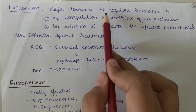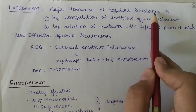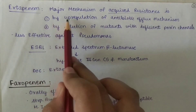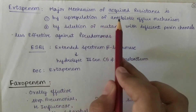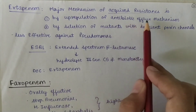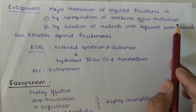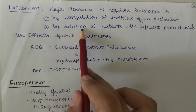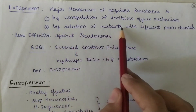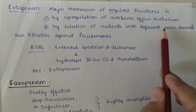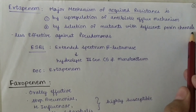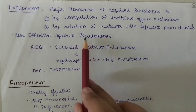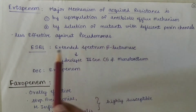The major mechanisms of acquired resistance for Ertapenem are: (1) upregulation of antibiotic efflux mechanisms, and (2) selection of mutants with deficient porin channels. It is less effective against Pseudomonas.